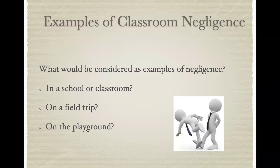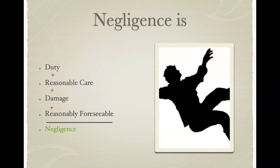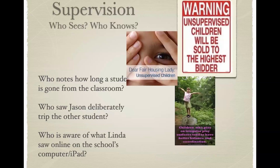Some examples of classroom negligence — be thinking about that as we go through this. That could happen as you're teaching in the classroom, or when you excuse a student to go to the bathroom, or two students inadvertently go at the same time because you forgot you sent another student out. Negligence is duty plus reasonable care. If there's a damage that's involved that's reasonably foreseeable — did I perform reasonable care? Was there damage? Could that injury have been foreseen? Maybe a mat that was folded over and somebody falls and hurts themselves.